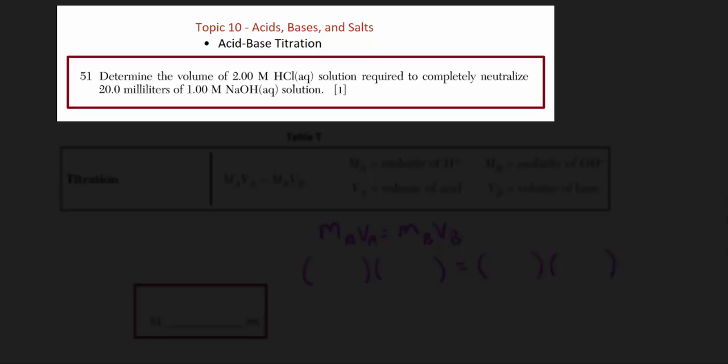Hello and welcome to the June 2015 Regents Exam in Chemistry. This is a walkthrough of Part B2, which consists of 15 free response questions from throughout the curriculum. Some questions are grouped together with a common narrative section, while others are standalone items. To skip to a particular question, click on the index button in the upper right corner of the screen. And now here's question number 51.